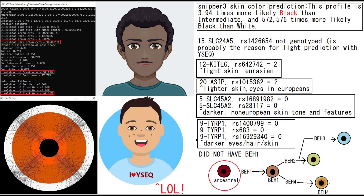WYSEC gave him a very funny prediction — it made him have white skin, which is probably because he wasn't genotyped for the main SLC24A5 mutation that WYSEC probably looks for to determine skin color. With Snipper Free, he's predicted to have black skin though.